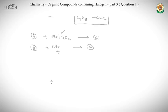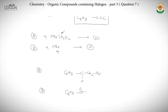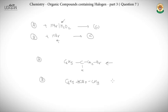So compound A will be C6H5-CH2-CH2Br — the product of anti-Markovnikov addition of HBr to styrene — where bromine goes to the terminal carbon. Whereas compound B will be C6H5-CHBr-CH3 — the product of Markovnikov addition — where bromine goes to the internal carbon bearing the phenyl group. So we have found A, B, and C.